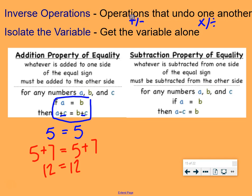And then the same thing is true for subtraction. Whatever is subtracted from one side of the equation must be subtracted from the other side. So, if we have a equals b, and we subtract c from the left, we have to subtract c from the right.